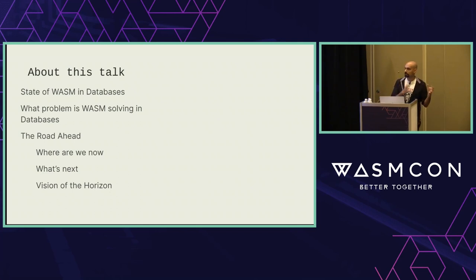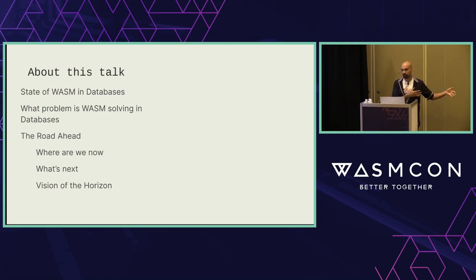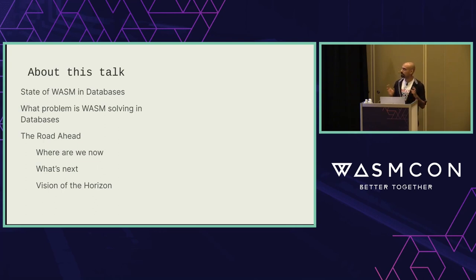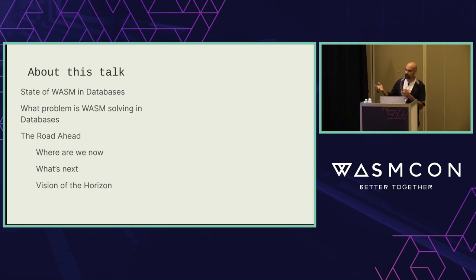The rough structure of this talk: I'm going to start with the state of Wasm in databases, then move on to the problems Wasm is trying to solve in database land, and then talk about what I see as the road ahead. Three parts: where we are right now, what's up next and in progress, and what's far out on the horizon. The talk is a little compressed at 30 minutes, so I'll dive directly into mechanics and jargon. Ask any questions or stop me at any point if anything's unclear — I prefer conversations over speeches.